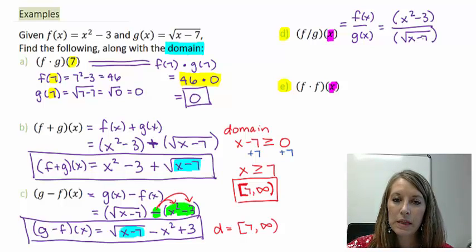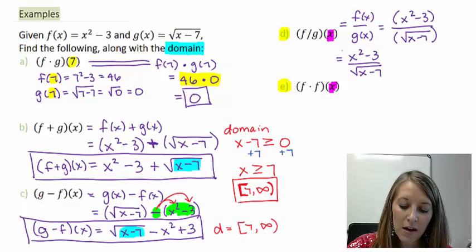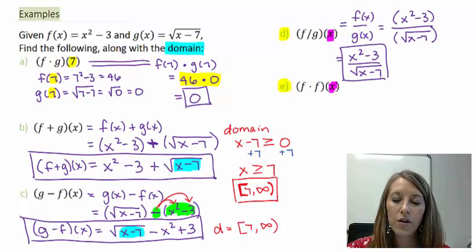I substituted these in with parentheses. This is one of the problems that it would not have affected you if you would have left the parentheses off. So just dropping those parentheses, f divided by g of x is x squared minus 3 over square root of x minus 7.